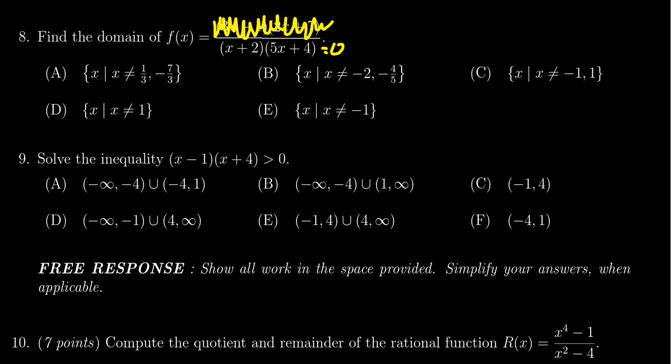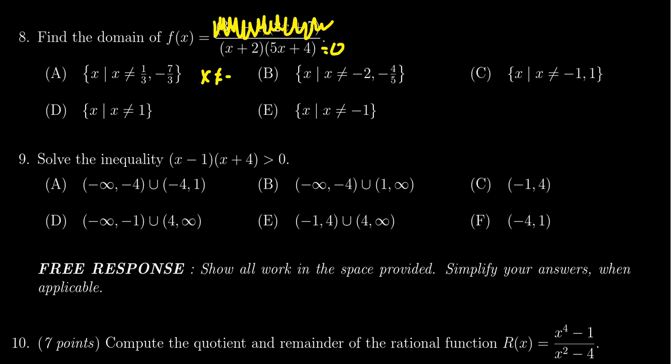And so from the first factor, we see that x should not equal negative 2. From the second factor, we see that x should not be negative 4 over 5, which actually I'm writing over the right answer. This would then tell us that the correct answer is B, all real numbers except for negative 2 and negative 4 fifths.